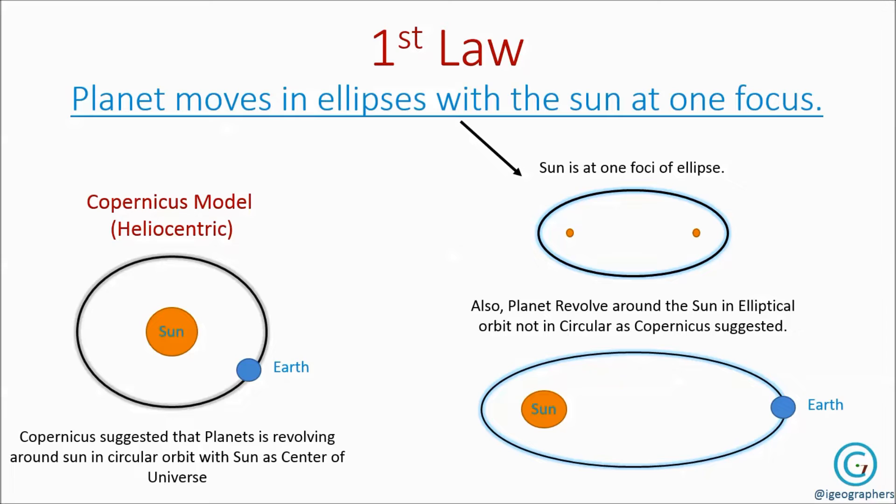Foci is nothing but the plural form of focus. A circle has only one center or focus, but an ellipse has two foci. So as per Kepler's first law of planetary motion, the sun is at any one foci while planets are revolving around it in elliptical orbit as mentioned in these figures.